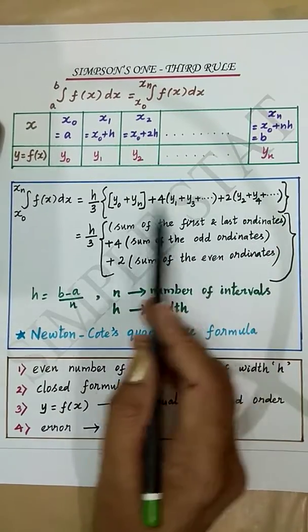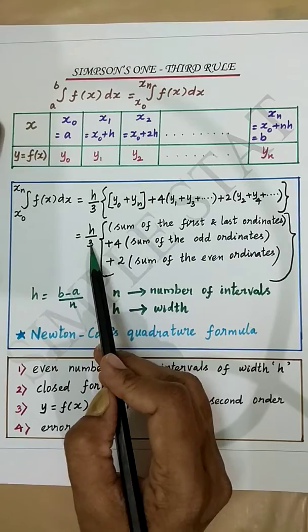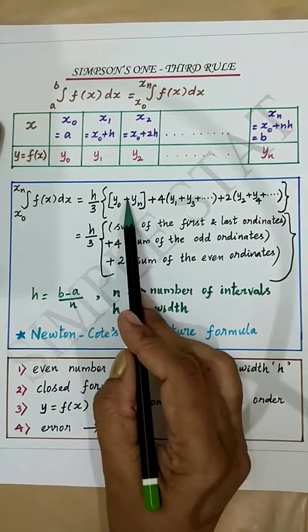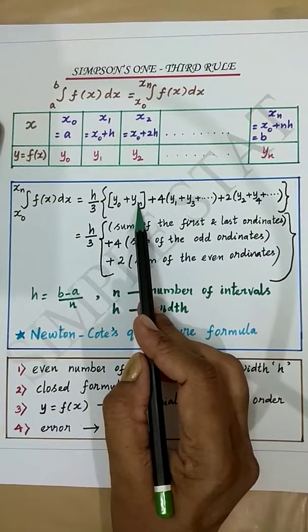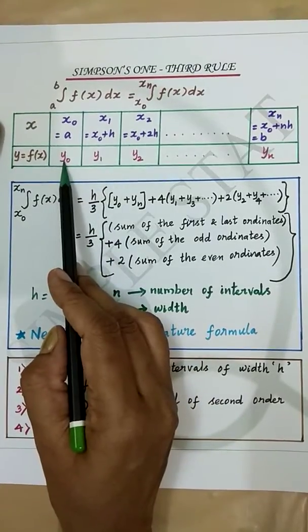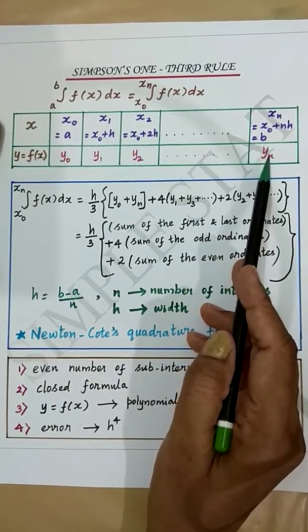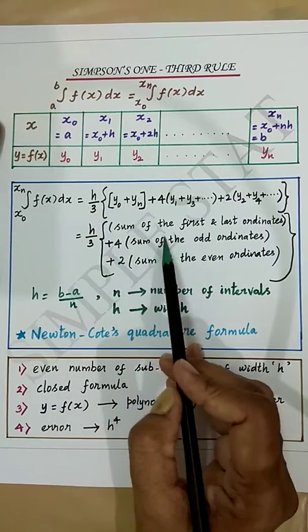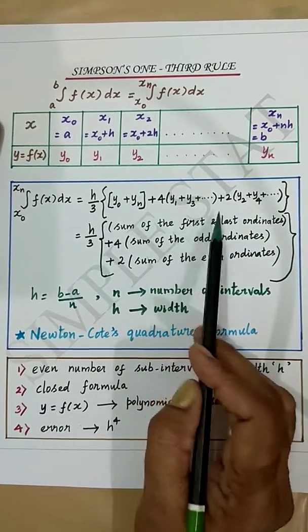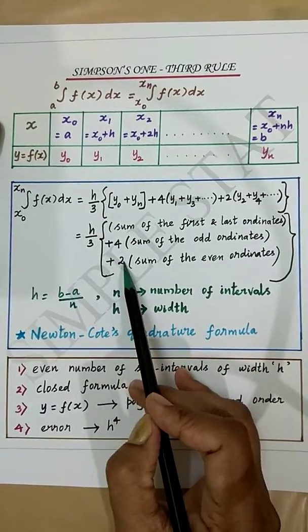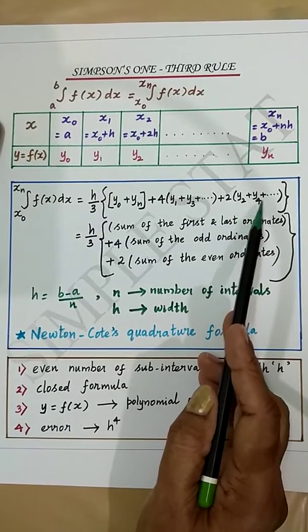This can be written as h/3 times the sum of the first and last ordinates (y₀ and yₙ), plus 4 times the sum of the odd ordinates, plus 2 times the sum of the even ordinates.